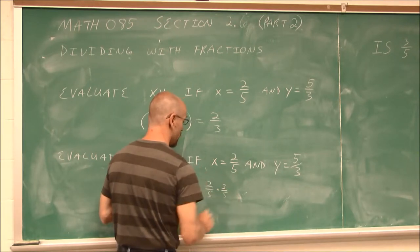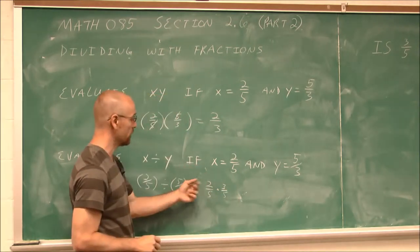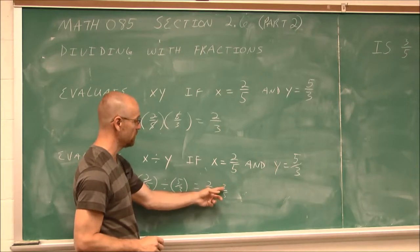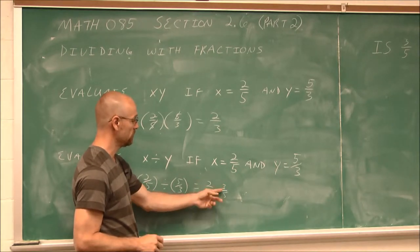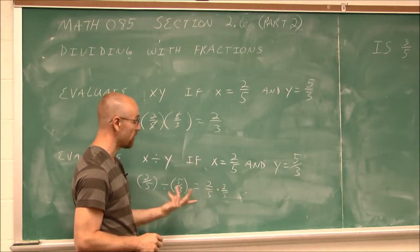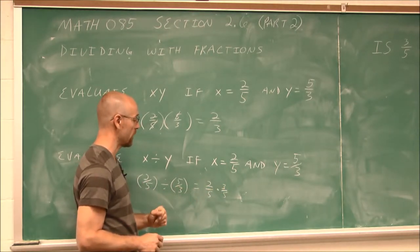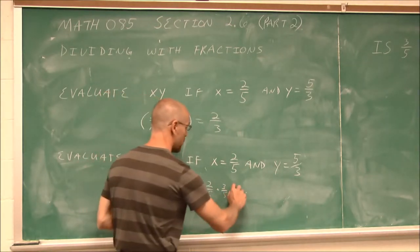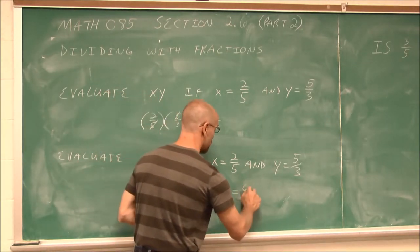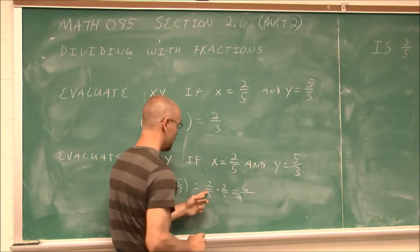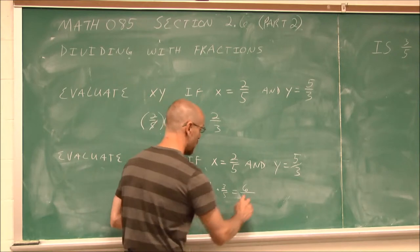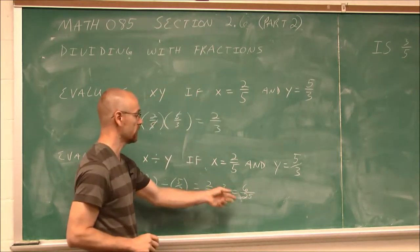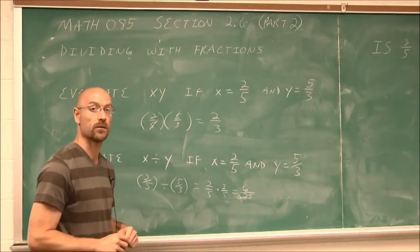We can see nothing's going to cancel. 2 and 5 have no common factors, and 3 and 5 have no common factors. So we're just going to multiply across. 2 times 3 is 6, and 5 times 5 is 25. So we get 6 twenty-fifths.